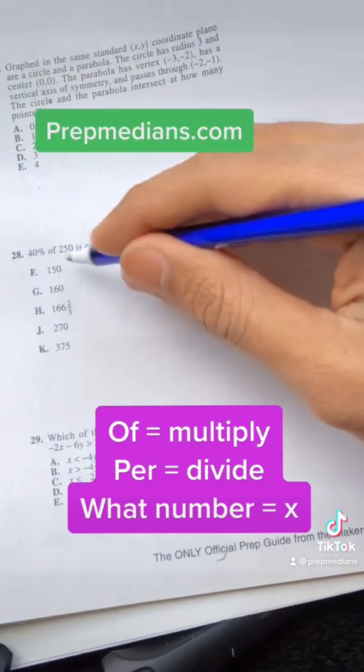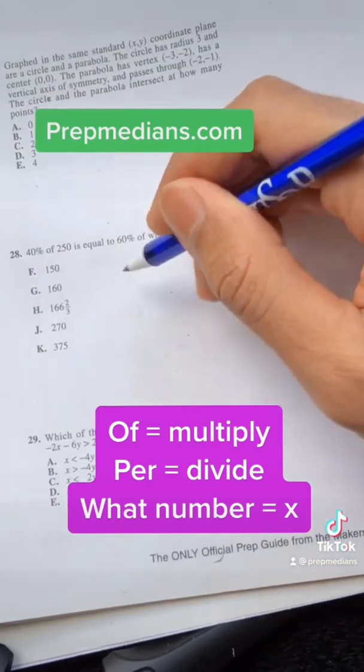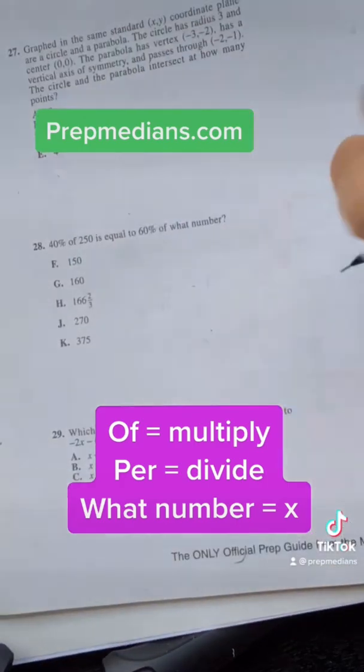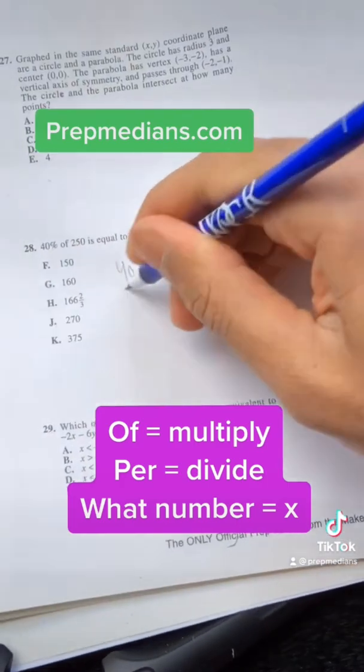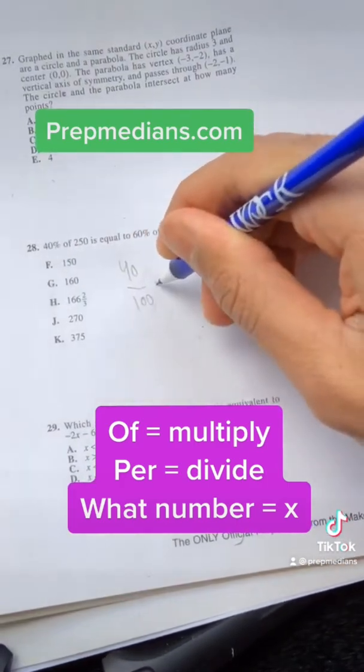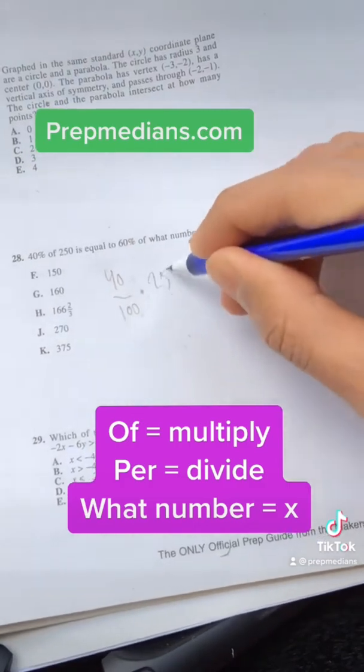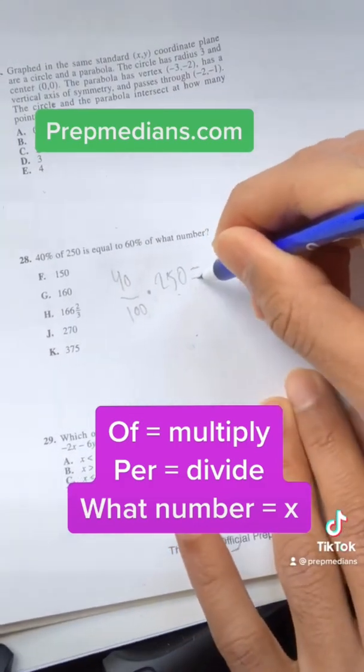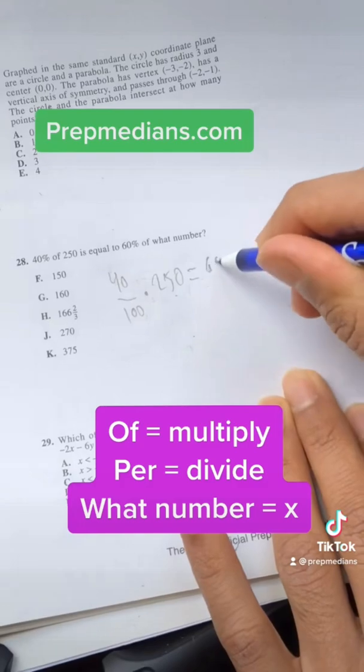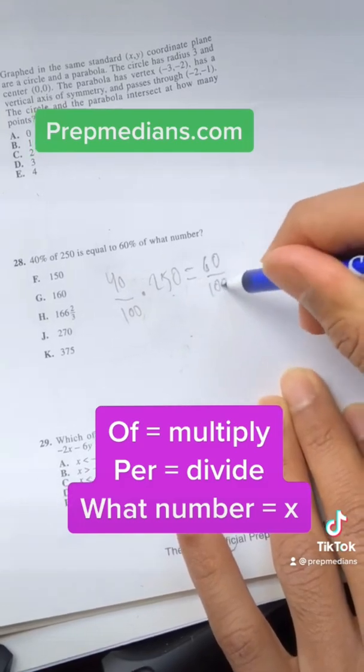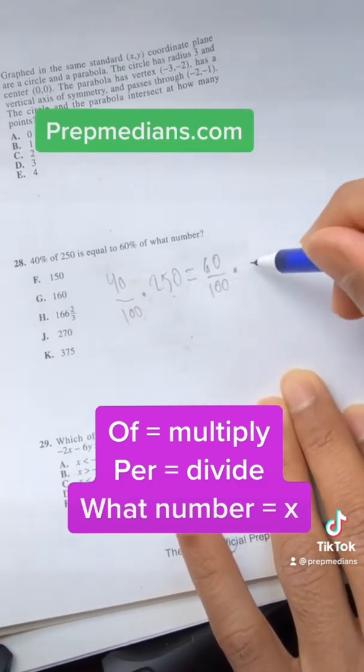Specifically, per cent means divide by cent, 100. So I see 40 per cent. What I do is 40 over 100. Of means multiply. 250 is equal to, you guessed it, equal sign. 60 per divide cent, 100. Of multiply X. What number?